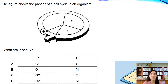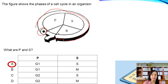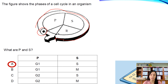The next question: the figure shows the phases of a cell cycle. The parent cell undergoes phases P, S, and R. What are P and S? The answer is G1 and S phase. Always remember that interphase consists of G1, S, G2 in that sequence. So P is G1, S is S phase, and R should be G2.